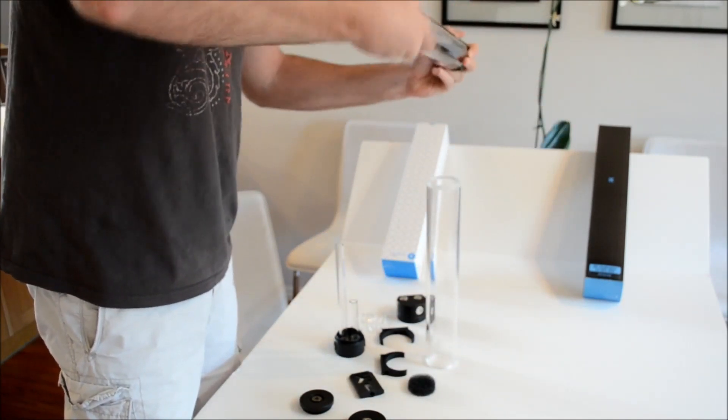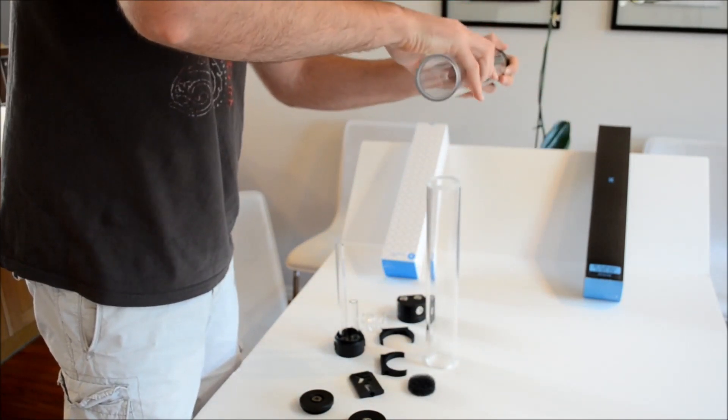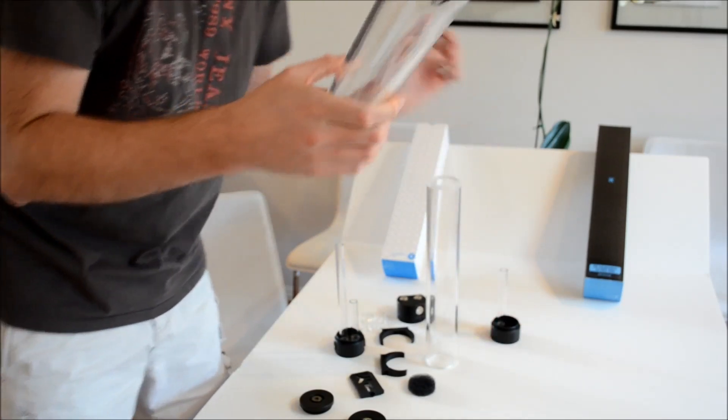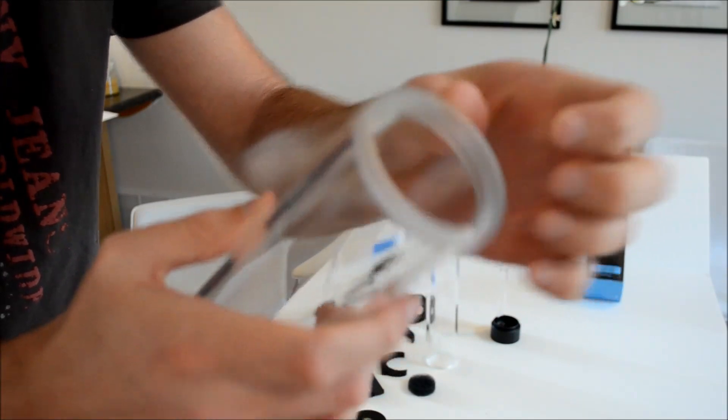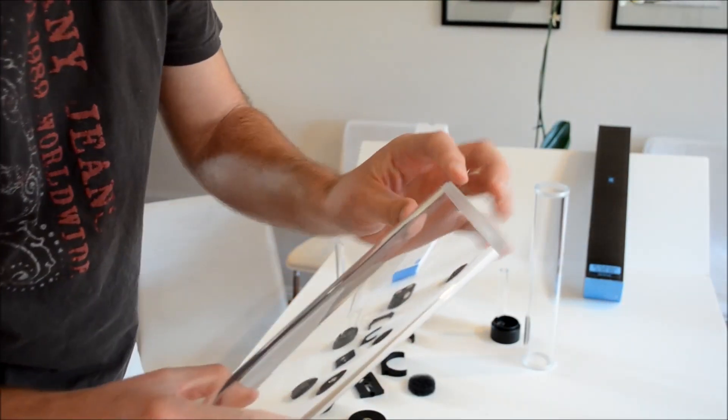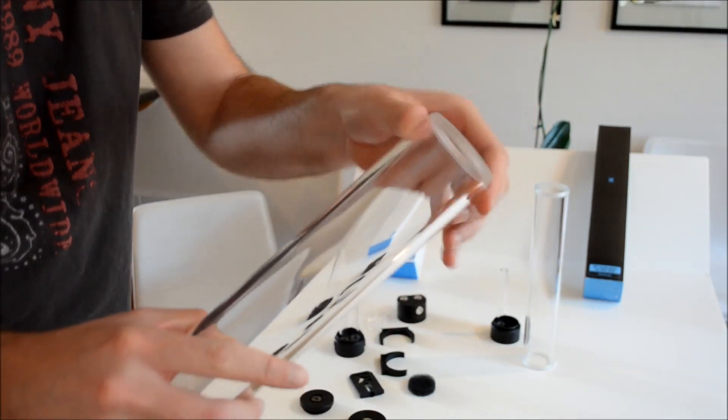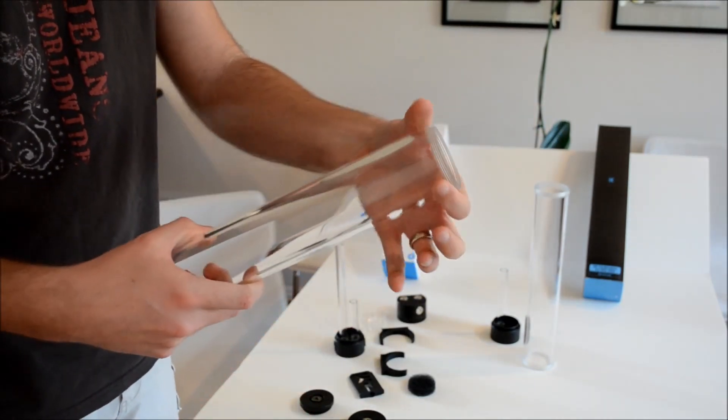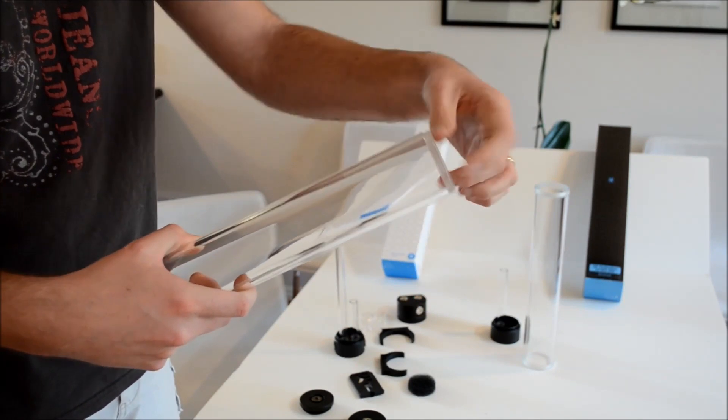you'll see on the X2 the threads are on the inside there. That's the X2. On the X3, the threads are on the outside. And I think that's better because that means you're always compressing the acrylic rather than expanding it.